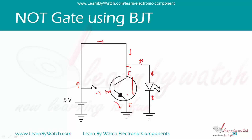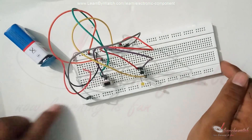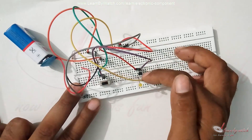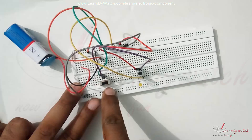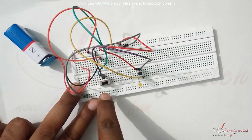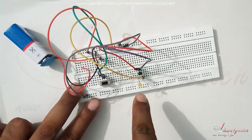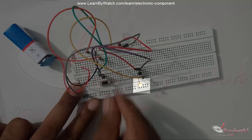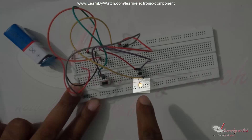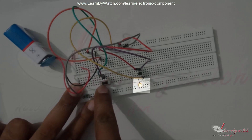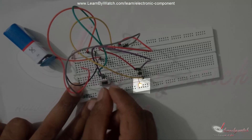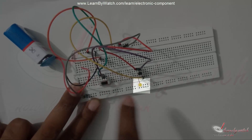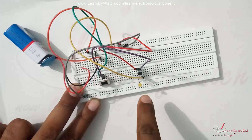I have made this circuit on a breadboard for you to understand. This is a circuit of NOT gate using BJT. This is our BJT and this is the switch. Currently, this switch is in ON state, so the LED is not glowing. If we switch it off, now you can see the LED starts glowing. So when the input is zero, the output is one. And when we switch this ON, the input is one and output is zero. So our circuit is correct.